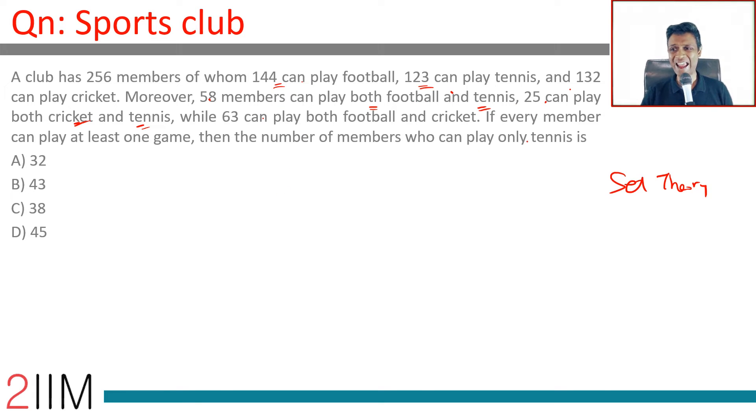If every member can play at least one game, that means a union b union c is this - there's nothing outside of this. We know that a union b union c equals a plus b plus c minus a intersection b minus b intersection c minus c intersection a plus a intersection b intersection c.